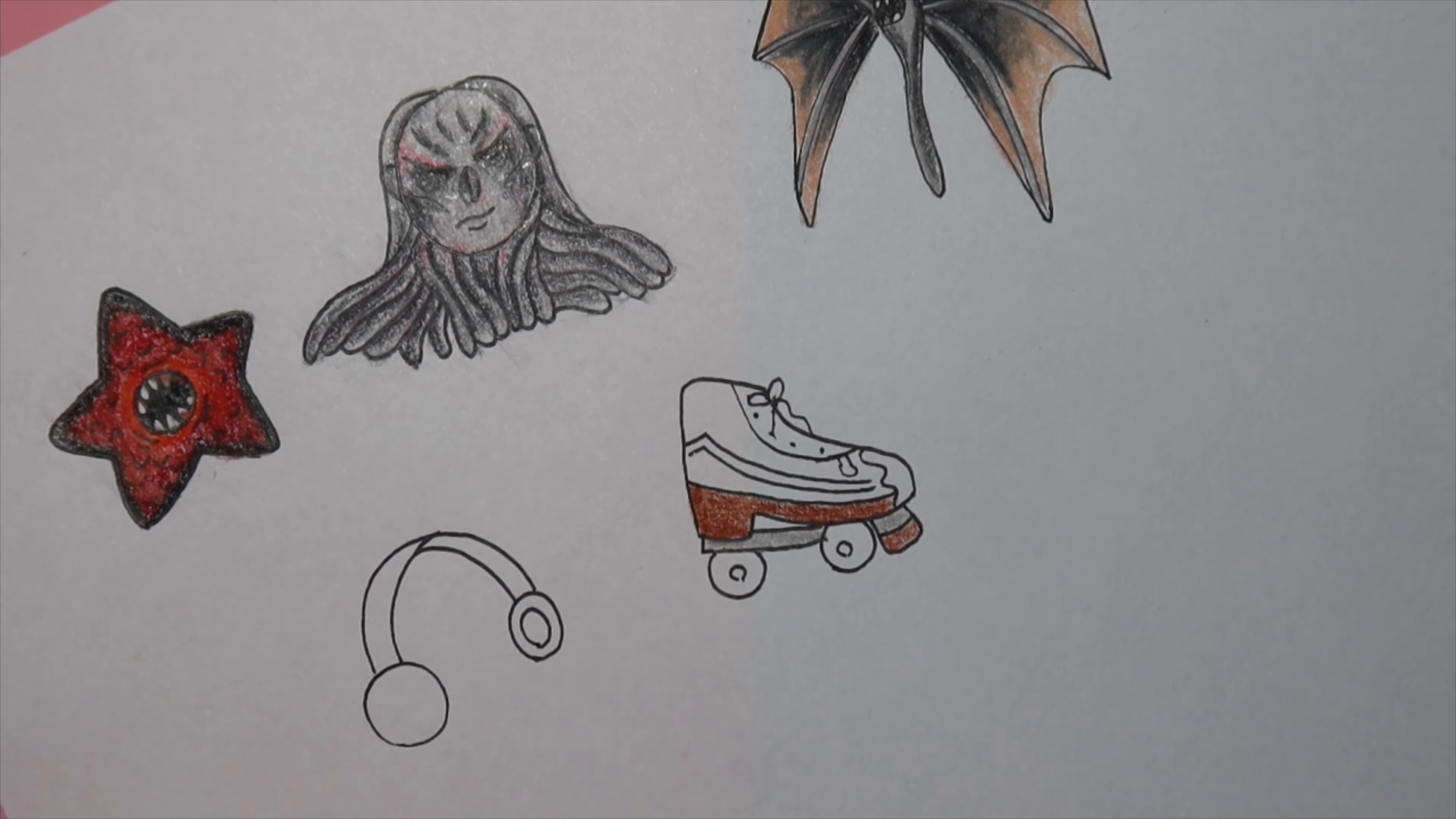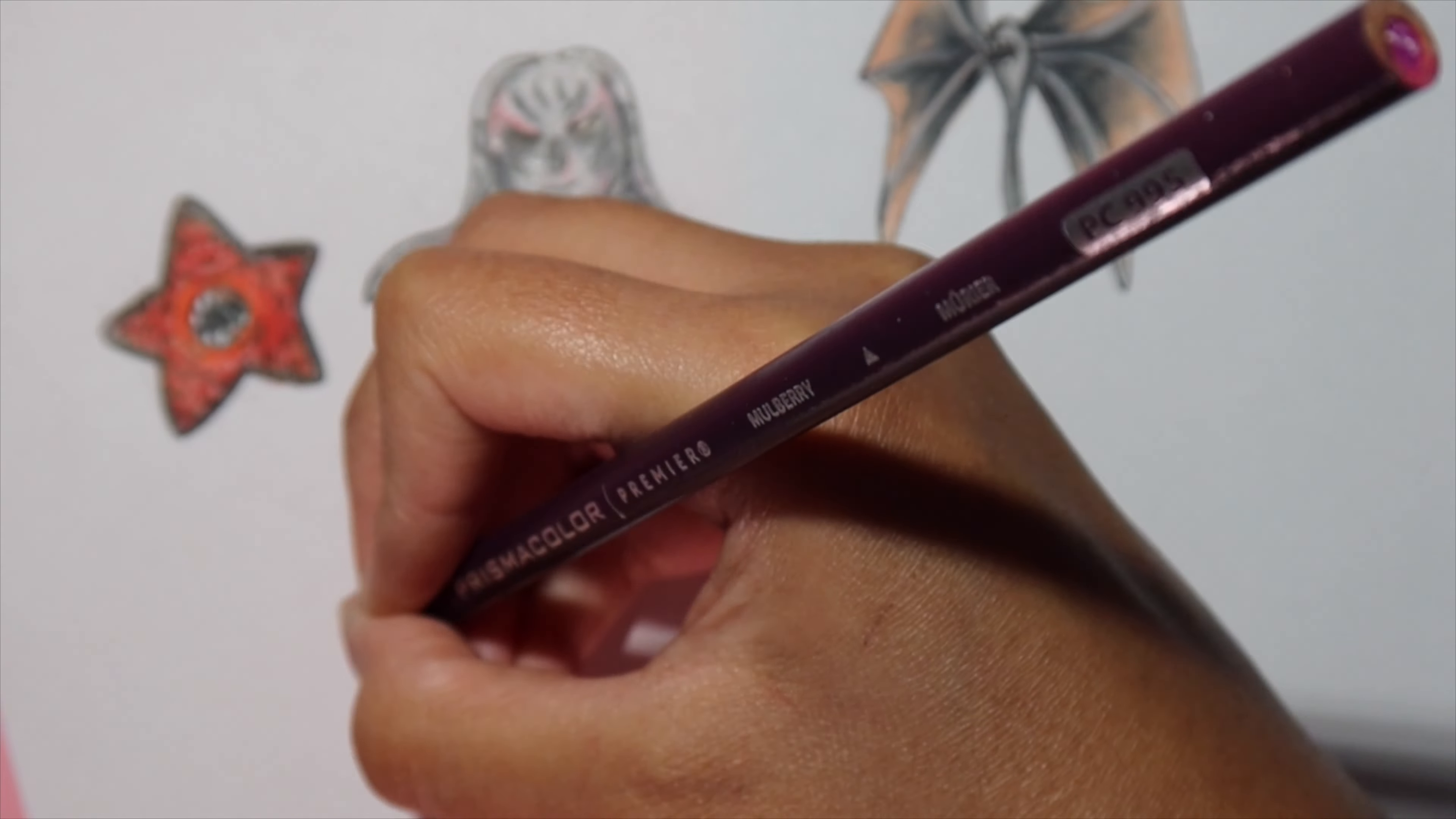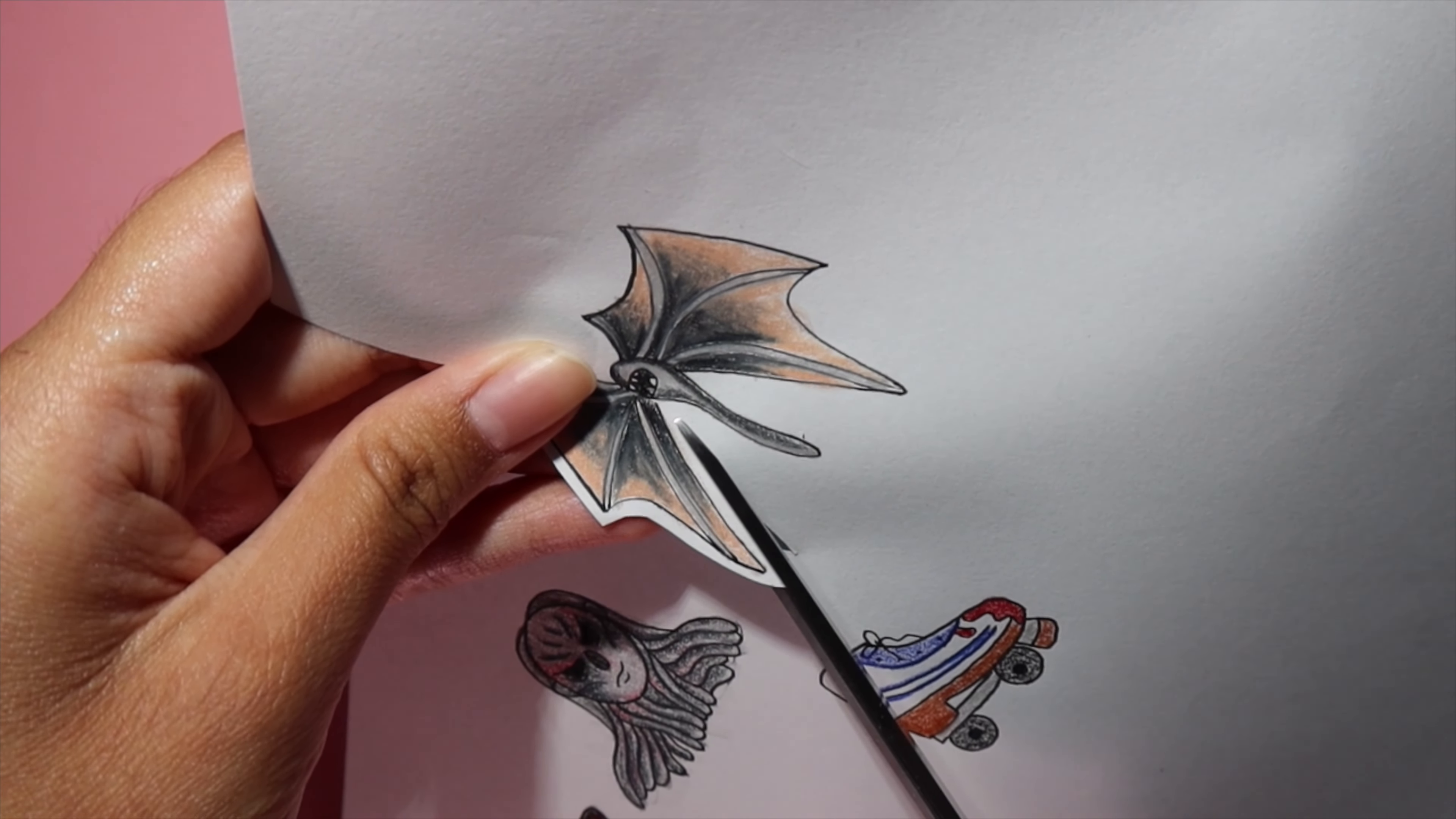And for the skates, I know it doesn't look like the skate from the show. I really wanted to add more color because those were more brown and just kind of neutral colors. So I wanted to add pop of color. I added some blue and made it a primarily white skate. And for the headphones, I wanted to make them purple. I know the ones Max used were black, but I wanted to add some more color because I felt like everything had a lot of black in it already.